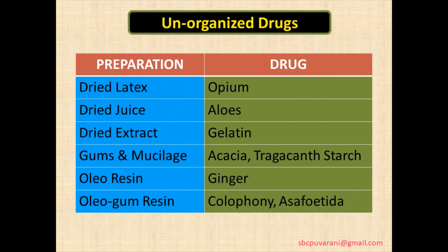Some examples of unorganized drugs: Opium is an example of dried latex. Aloe is an example of dried leaf juice. Gelatin is a dried extract. Acacia and tragacanth are examples of gums and mucilage. Ginger oleoresin; colophony and asafoetida are examples of oleogum resin.